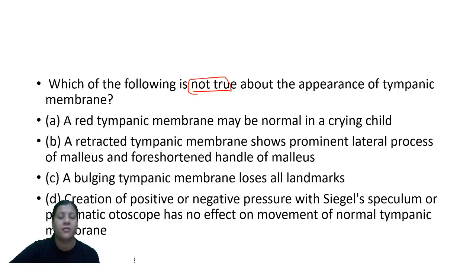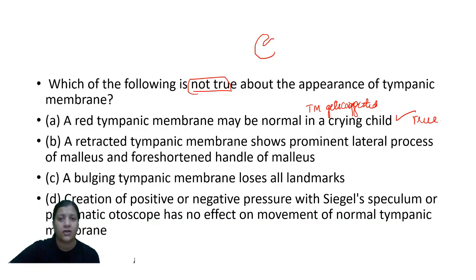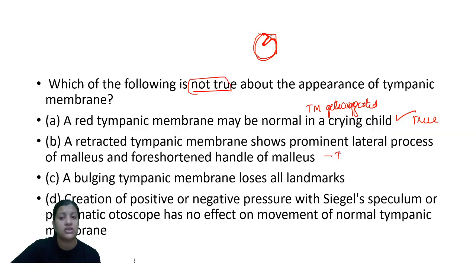A red tympanic membrane in a crying child — this is the correct answer because a red tympanic membrane may be normal when a child cries. The tympanic membrane gets congested, so a red TM is possible. This is a true statement. A retracted tympanic membrane — when the TM gets retracted, the malleolar folds become more prominent, the handle of malleus becomes prominent and looks foreshortened, the lateral process becomes prominent. So option B is also a true answer.